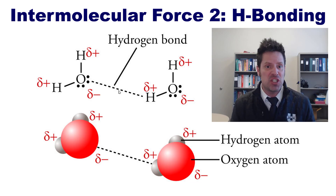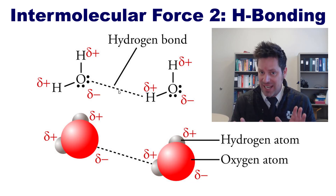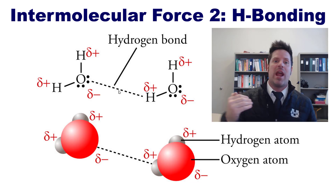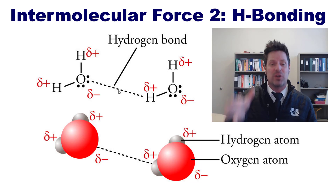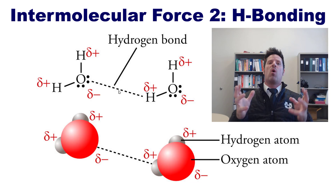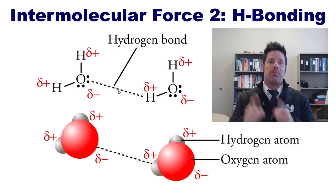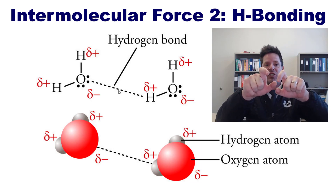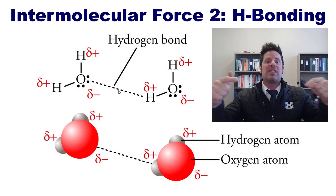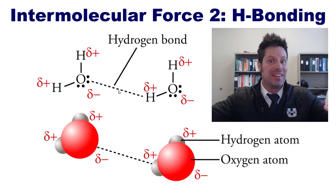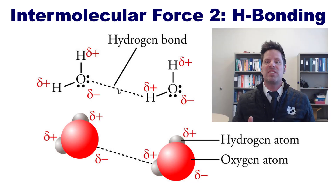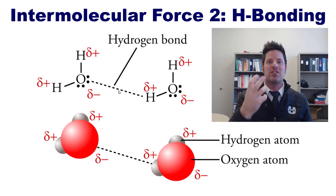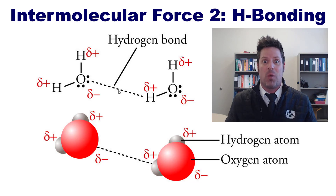This gives H₂O its relatively high boiling point and melting point for its molecular weight. For example, H₂O has a molecular weight of around 18, and yet you have to heat it all the way up to 100 degrees Celsius to get it to boil — to wiggle apart these H₂O molecules enough to convert them from a liquid to a gas. All of this is caused by hydrogen bonding, this very strong intermolecular force.